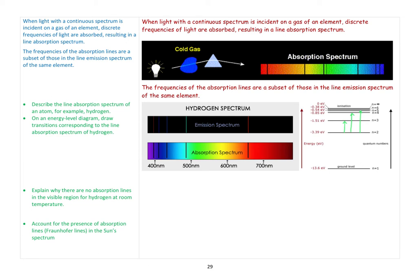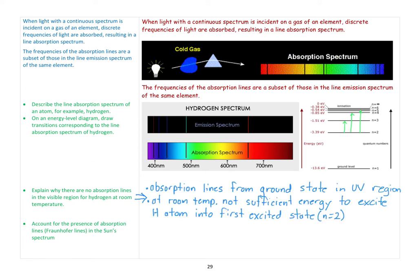We need to explain why there are no absorption lines in the visible region for hydrogen at room temperature. At room temperature, dealing with a cold gas, there would be no atoms in the first excited state. There's not sufficient energy to excite hydrogen into the n=2 state, so if there are no hydrogen atoms in the n=2 state, you won't see those visible absorption lines.